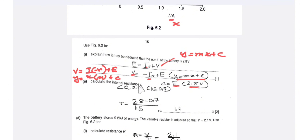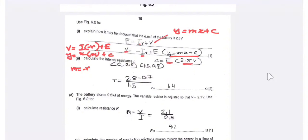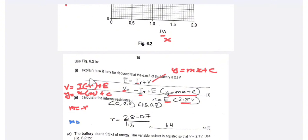Now calculate the internal resistance r. We know that the gradient equals negative of the internal resistance, so M = -r.